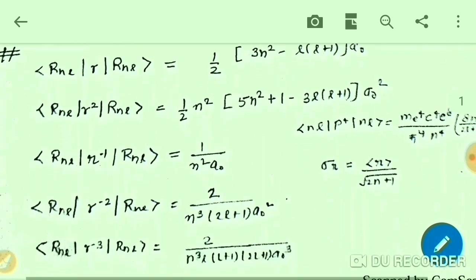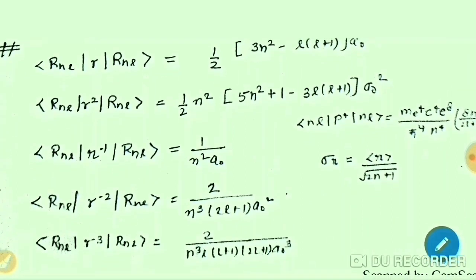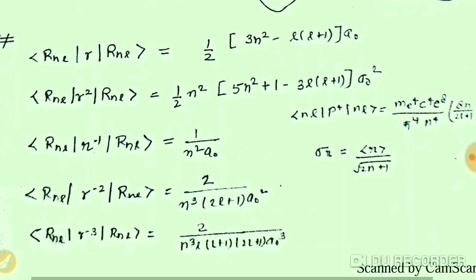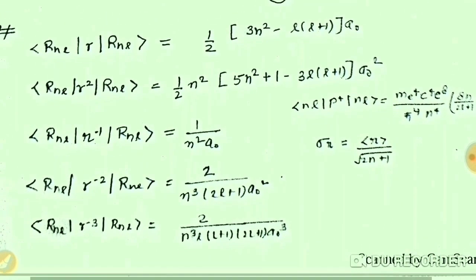You can take a screenshot of this. I have written all the formulas here. The expectation value of R² is (n²/2)[5n² + 1 − 3l(l+1)] a₀². The expectation values of 1/R, 1/R², and 1/R³ are also listed — you can directly put the values of n and l and get the results.